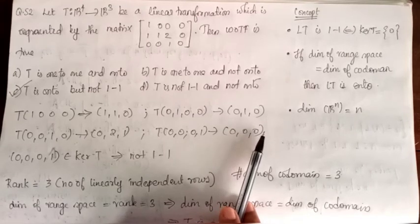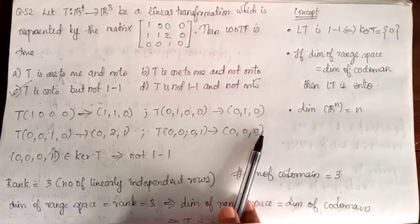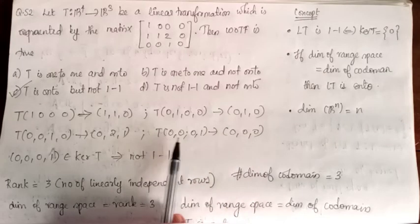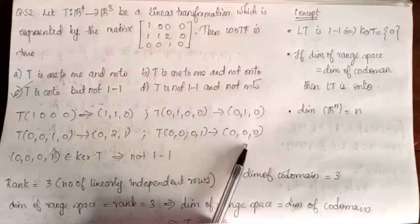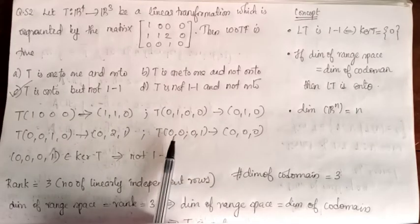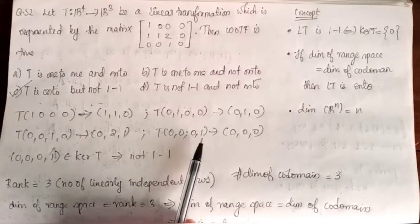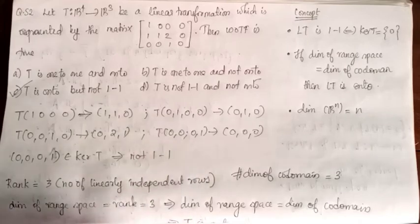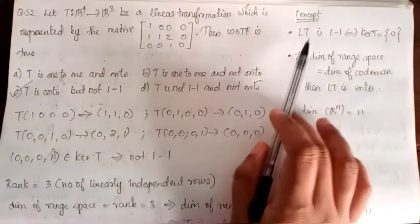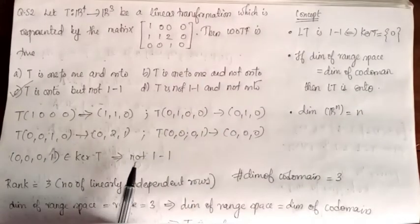The kernel of T is the set of all elements in R4 which are mapped to the identity element (zero vector) in R3. The kernel of T contains the element (0,0,0,1), so (0,0,0,1) is in kernel T. So the kernel is not trivial.